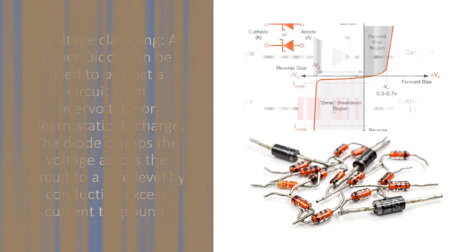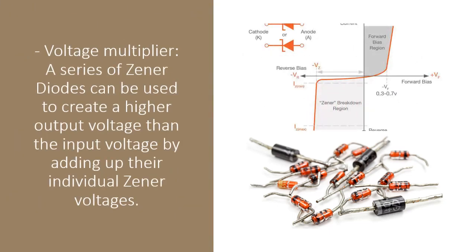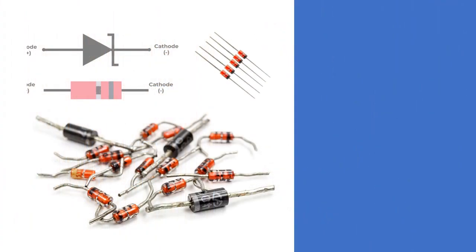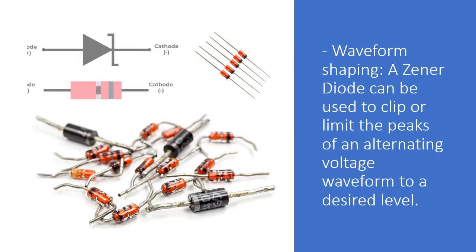Voltage multiplier: A series of Zener diodes can be used to create a higher output voltage than the input voltage by adding up their individual Zener voltages. Waveform shaping: A Zener diode can be used to clip or limit the peaks of an alternating voltage waveform to a desired level.